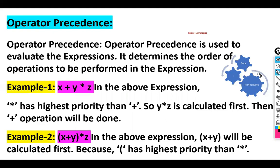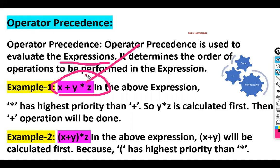Operator precedence is used to evaluate expressions — it determines the order in which operators are performed. For example, in the expression x + y * z, multiplication has higher precedence, so y multiplied by z is calculated first, and then the addition is performed.